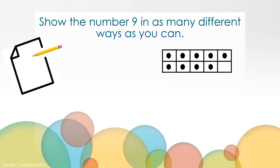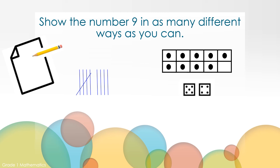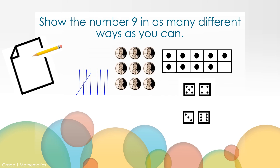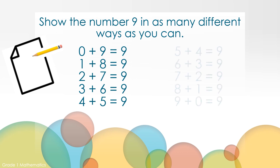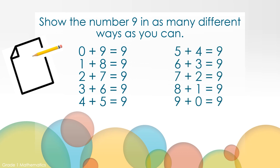Maybe you thought about tallies — five and four make nine. Maybe you thought about dice — five and four make nine, or three and six make nine. Maybe you thought about pennies. Maybe you thought about equations. Were these some of the equations you brainstormed? Zero plus nine equals nine, one plus eight equals nine, two plus seven equals nine, three plus six equals nine, four plus five equals nine, five plus four equals nine, six plus three equals nine, seven plus two equals nine, eight plus one equals nine, nine plus zero equals nine.